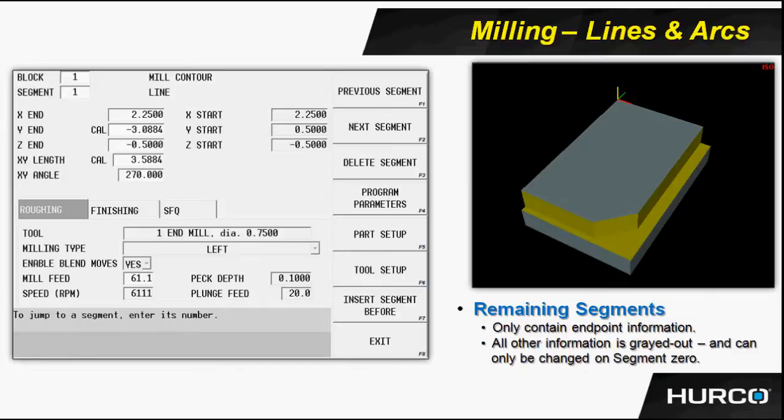Everything in the white open fields on the left-hand side where we've entered information is the point where we're ending. If you look to the right, you see the X, Y, and Z starting point — that is the point from which you are coming. I can't alter that information; it's there for reference only, but it is helpful in many cases.